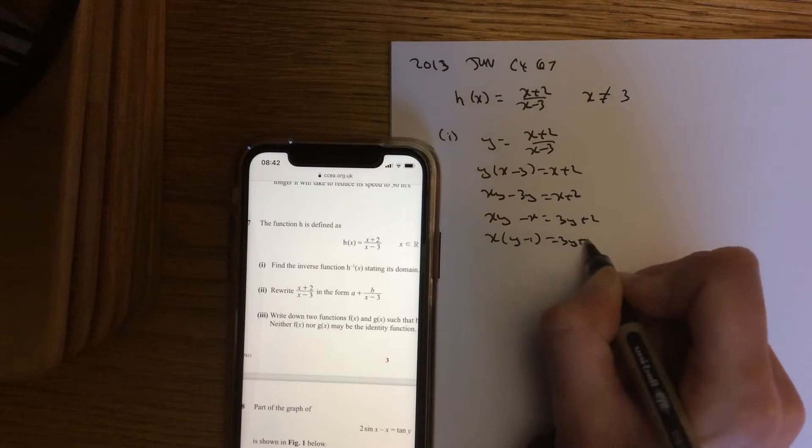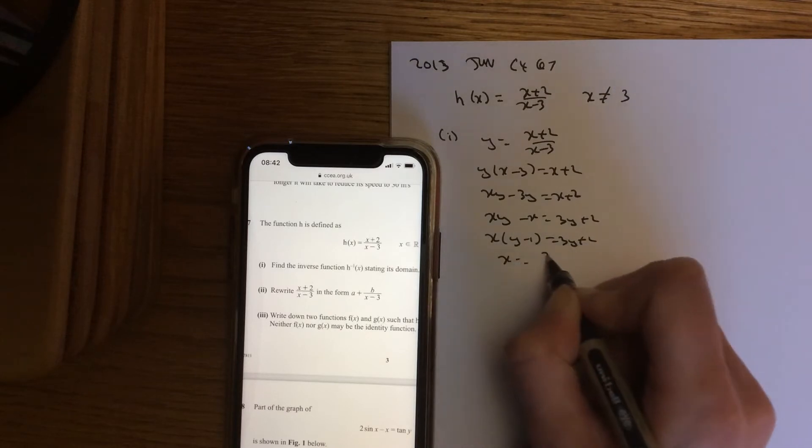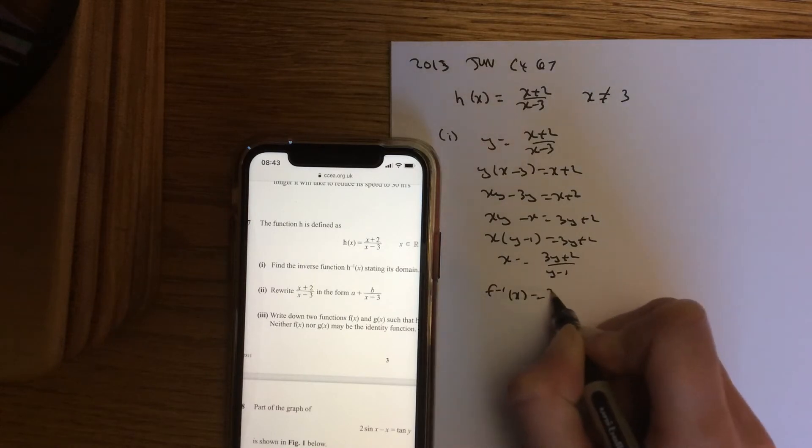Factorize out your x and bring your bracket to the other side, and then you'll rewrite x as f^(-1)(x) and rewrite y as x.